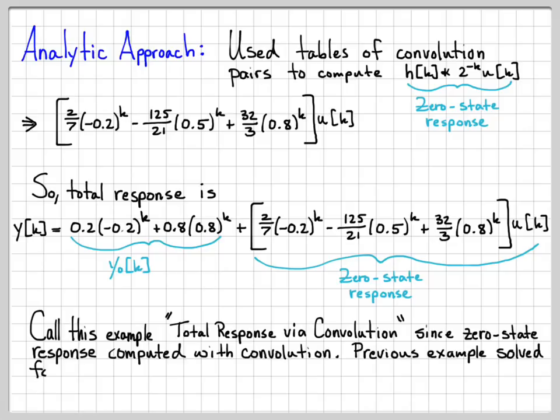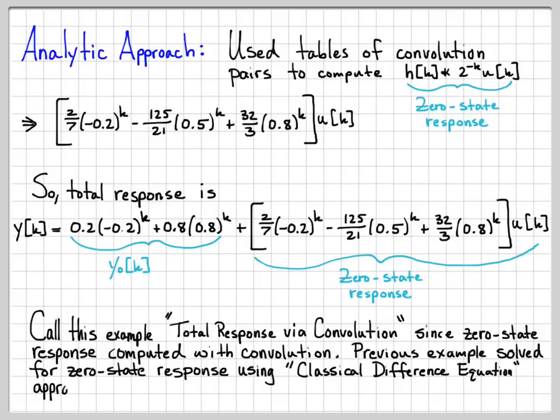In previous examples that we worked, we solved for the zero-state response using what I called the classical difference equation approach. And that's where you basically guess a form of the forced response, plug it into the equation, and then solve for the constants. I'm calling this total response via convolution because we're figuring out the zero-state response using the impulse response convolved with the system input.